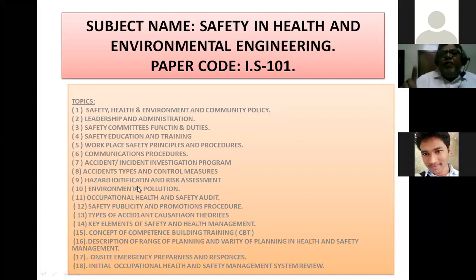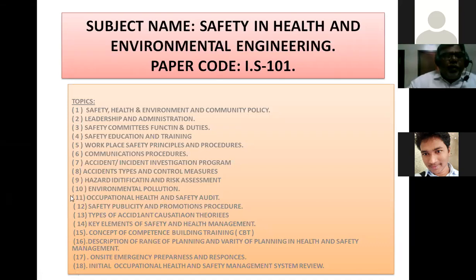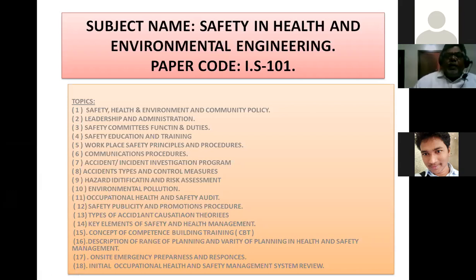Each topic will take minimum one hour online, or one and a half hours offline. Moving to the tenth chapter on environment pollution — types include water pollution, air pollution, and global warming. Main causes and main effects of environment pollution are also covered in this chapter.